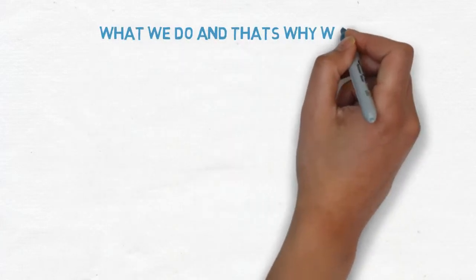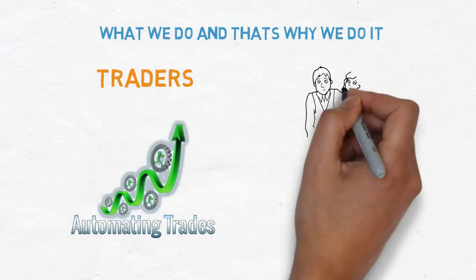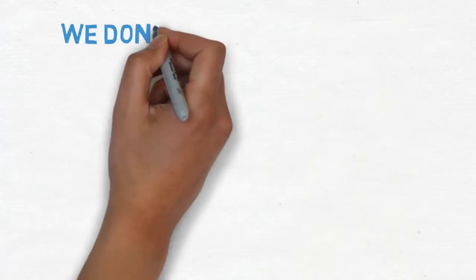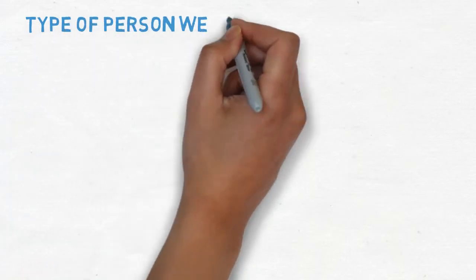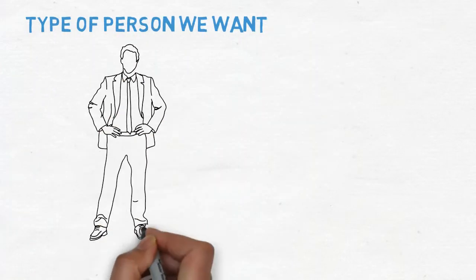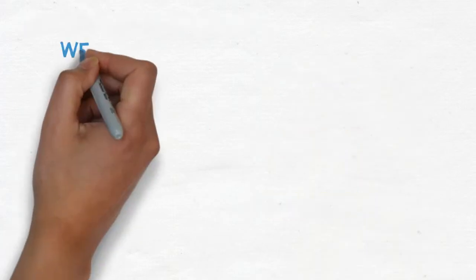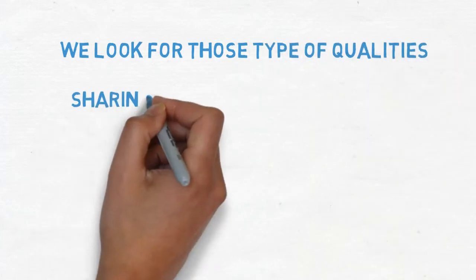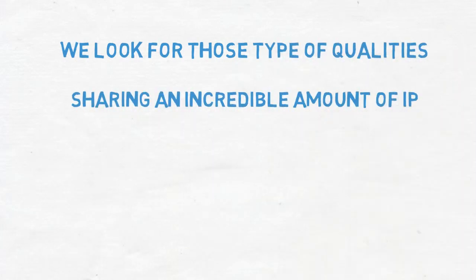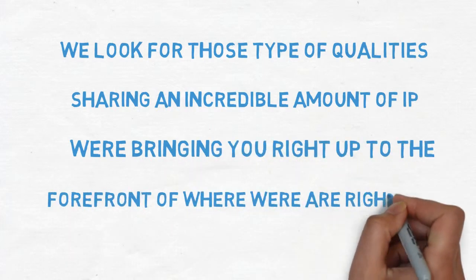So that's what we do and why we do it. Traders who are in automating trades are like a close family. We don't take on everybody. What we like to do is have a chat with you. And if you're the type of person that we want, we'll invite you to join. Now, the type of person that we want is someone who loves a good laugh, someone who's honest and someone who really has that integrity about them. And the reason we look for those types of qualities in someone before we bring them on is because we are sharing an incredible amount of IP. We are bringing you right up to the forefront of where we are right now.